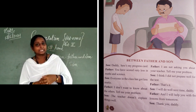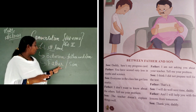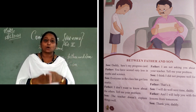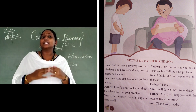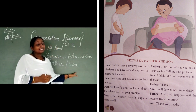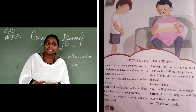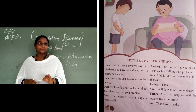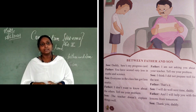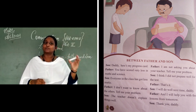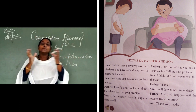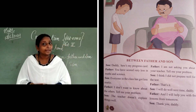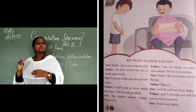The father is telling that he wants to know the child's own problem, not about the teachers. Then the son says: I think I did not prepare well for the test. Now the son is confessing — confessing means accepting his mistake — that he did not prepare well for the test, so he got less marks. Father says: That's it. Son says: I will do well next time, daddy. Father says: And I will help you with the lessons from tomorrow.